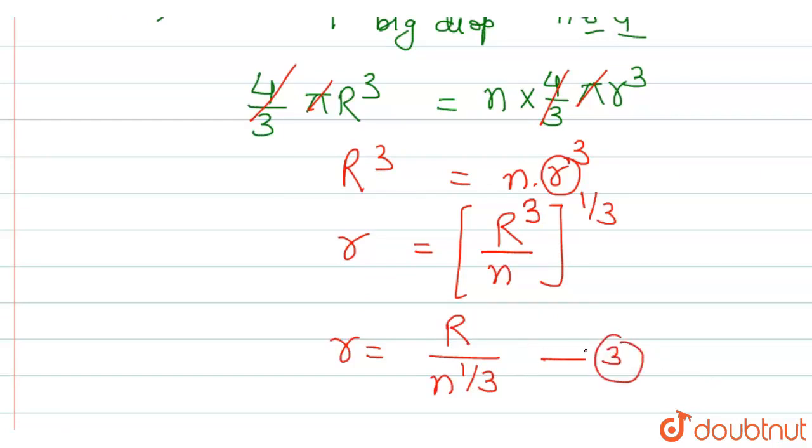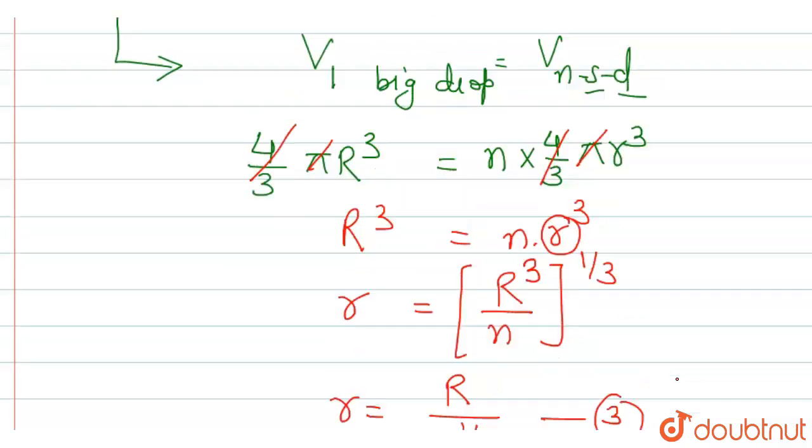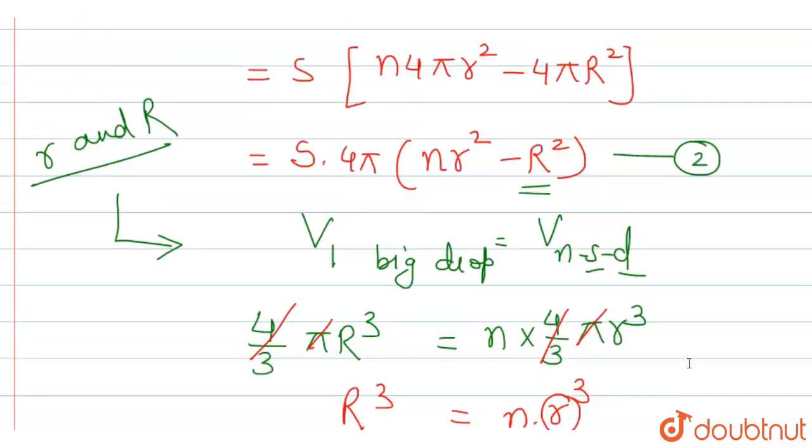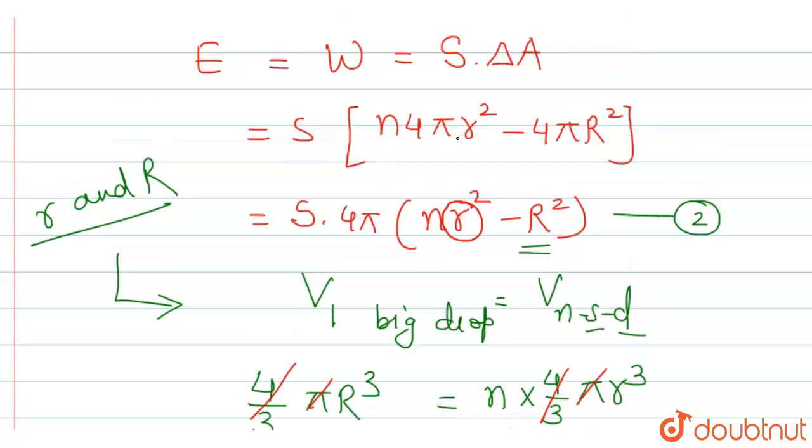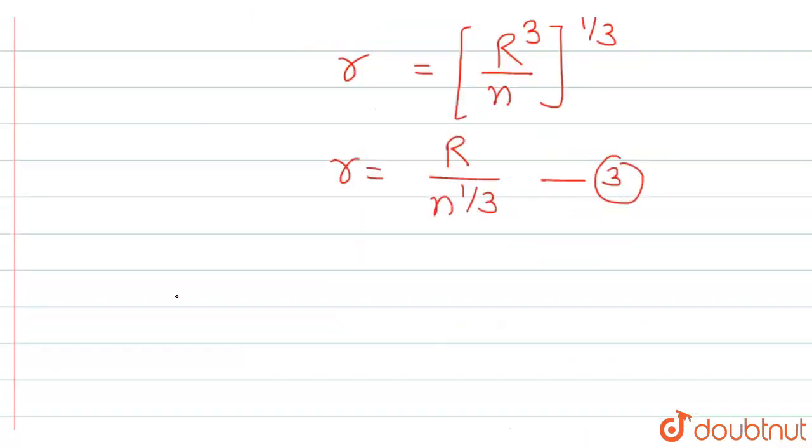We can put this value in the previous equation for the change in area. We can put this value over this place. We can get the energy is equal to, actual equation was, energy is equal to s into 4 pi n r square minus capital R square which was equation 2. We can put the value of this small r. This is s into 4 pi n into...